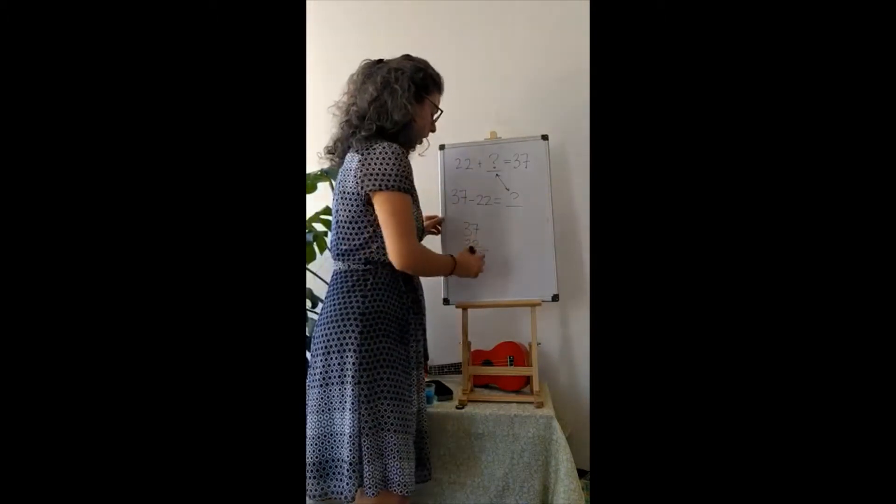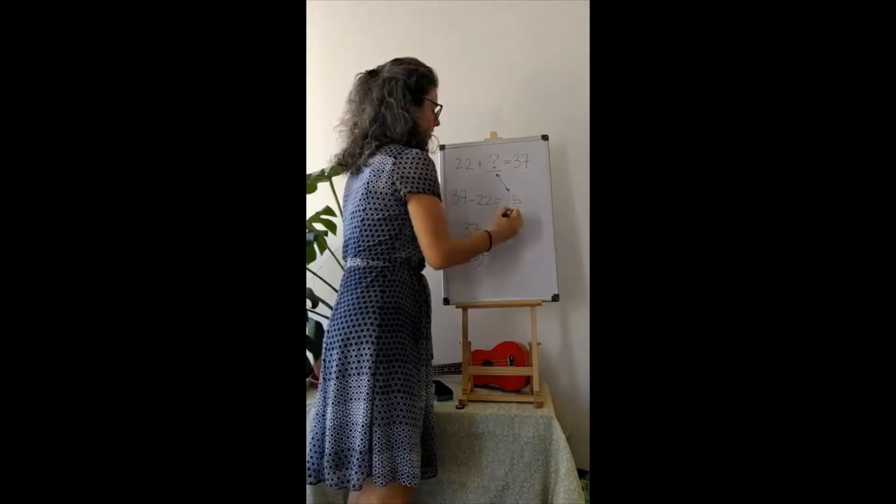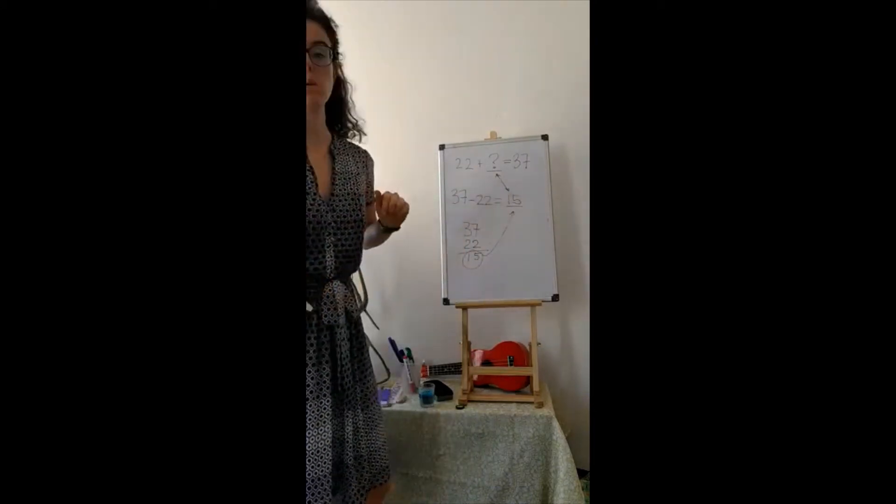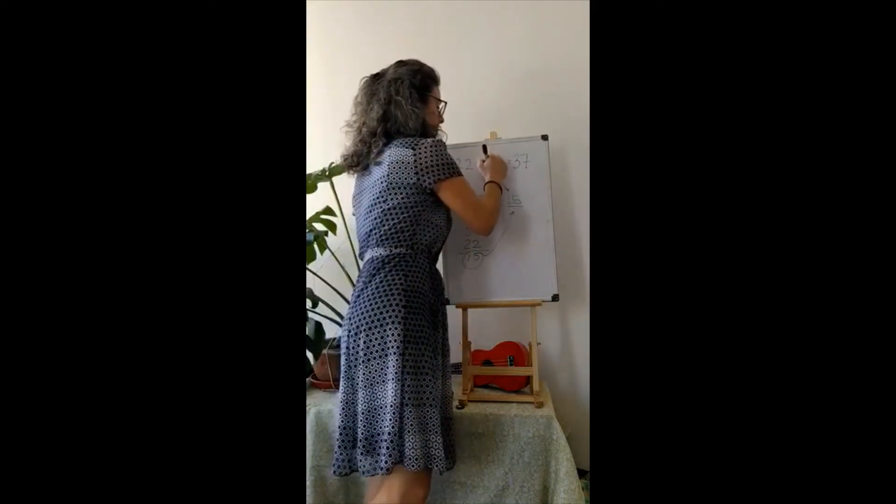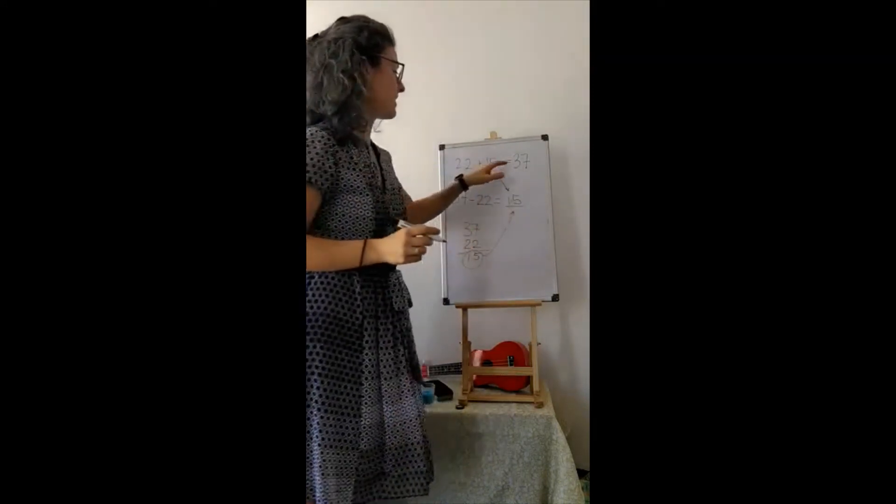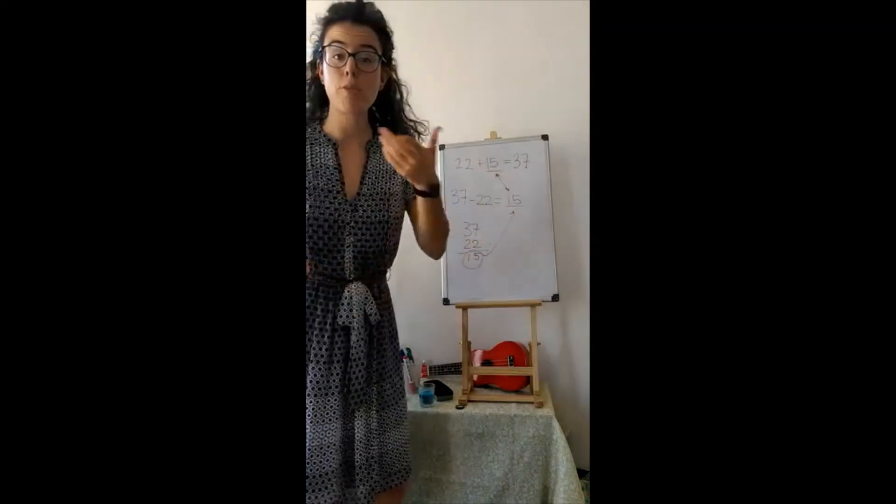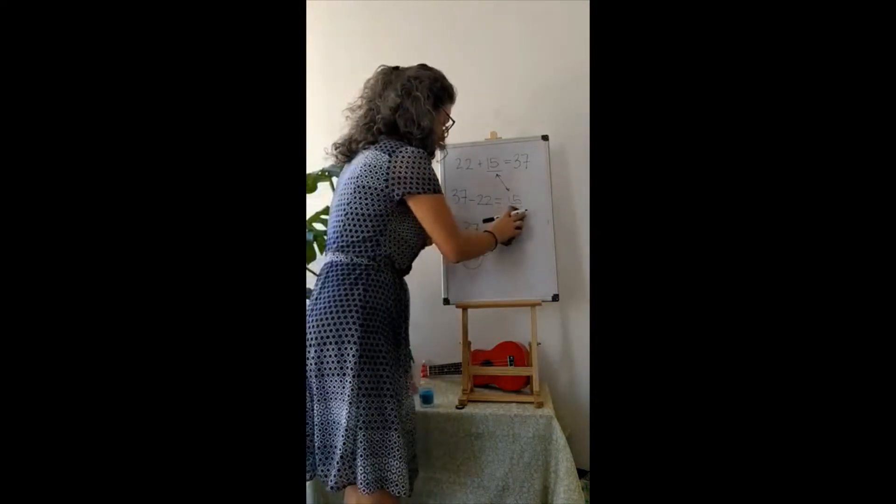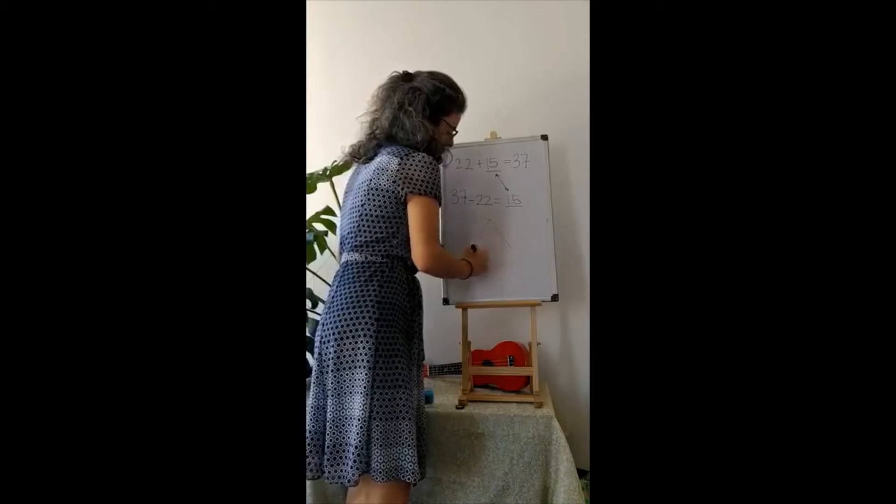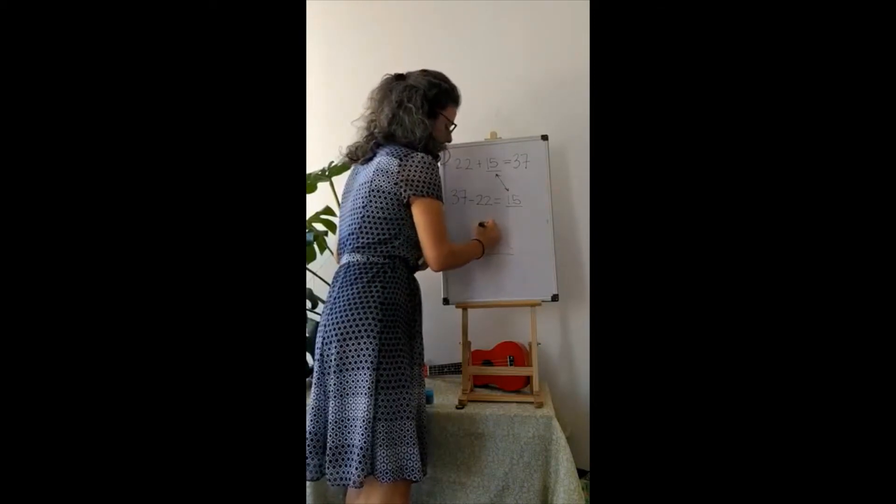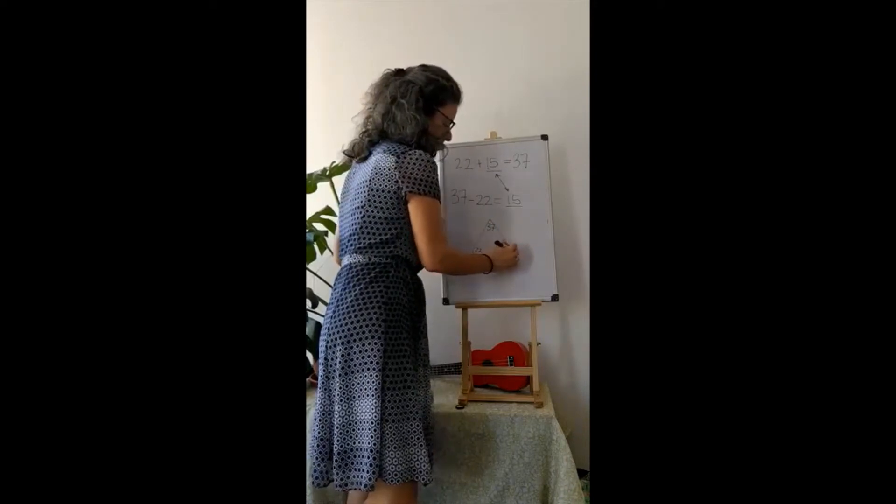So therefore, we know that thirty-seven minus twenty-two is equal to fifteen, which means that twenty-two plus fifteen is equal to thirty-seven. And so if we made a number family triangle with these numbers, we would put thirty-seven up here because it's the biggest, and then our two other numbers down at the bottom.